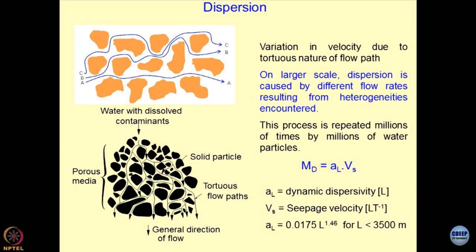This picture shows how solid particle and fluid interaction takes place, what is the tortuous path and the direction of flow, and how porous media is modeled. When we talk about dispersion, we use the coefficient md, which equals the dispersion coefficient in the lateral direction multiplied by the seepage velocity. Al is the dynamic dispersivity and Vs is the seepage velocity — Al depends on the flow path. Because when flow takes place through compacted soils, the seepage velocity is extremely small, the md term becomes insignificant.